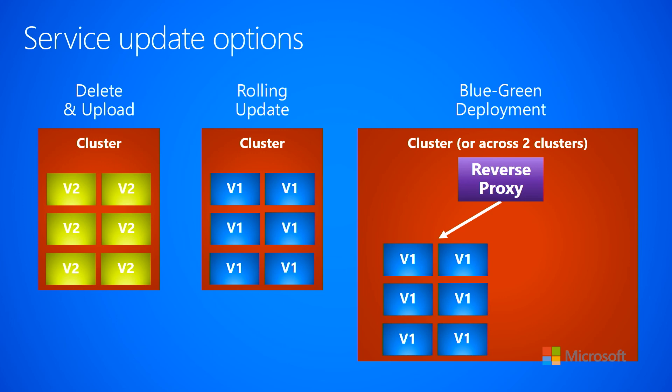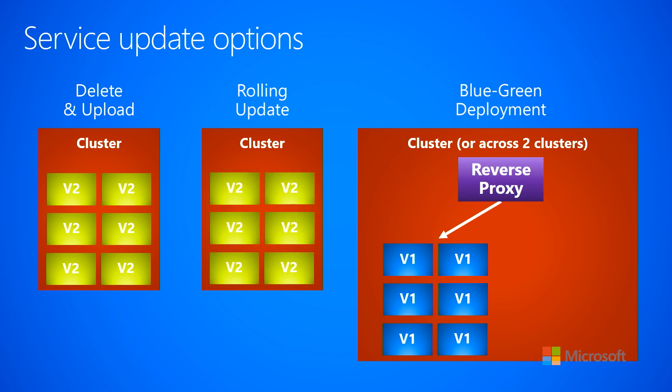The second service update option is called a rolling update. In this scenario, the cluster has six instances of your code running version one. But instead of bringing all six instances down at once, you bring down a couple of instances and bring them up as version two, then bring down the next two instances and bring up version two, then bring down the last two and bring up version two.